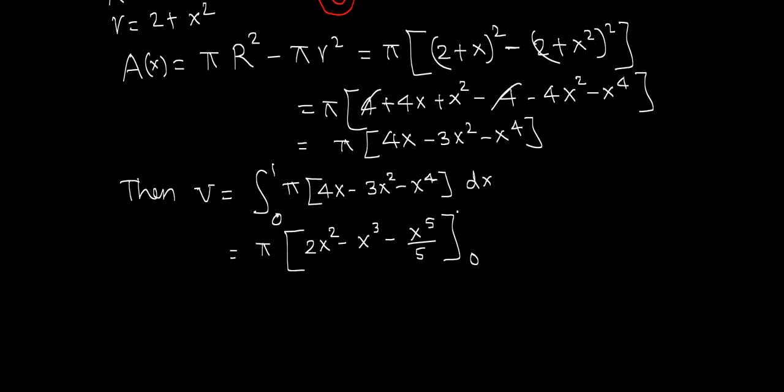Evaluate at 1 minus evaluate at 0. Pi is outside. Everything becomes 0 at the lower limit. Just plug in 1 for x: 2 times 1 squared is 2, minus 1 cubed is 1, minus 1 to the fifth is 1 fifth. So pi times 2 minus 1 is 1, 1 minus 1 fifth is 4 fifths. The final answer is 4 pi over 5 or 4 fifths pi cubic units.